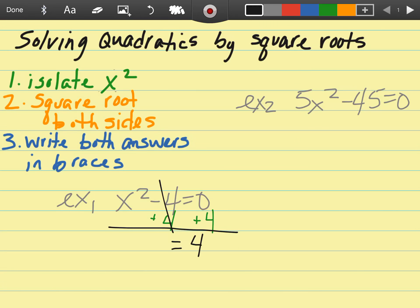X squared comes down and we're ready for step two: square root both sides. The square root of four is two, the square root of x squared is x. The thing most people forget is that we need to include a plus two and a minus two because both two times two and negative two times negative two will get you to four.